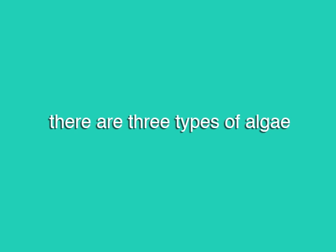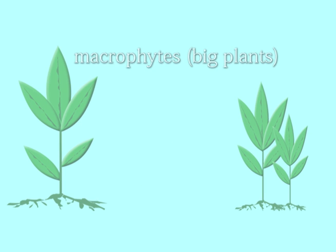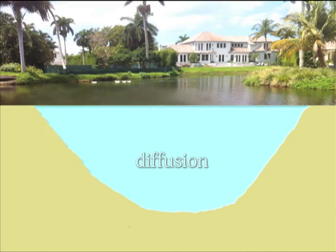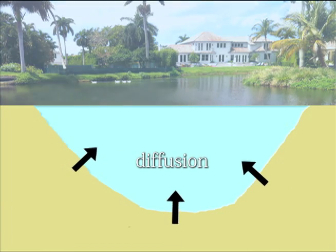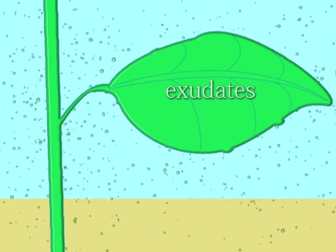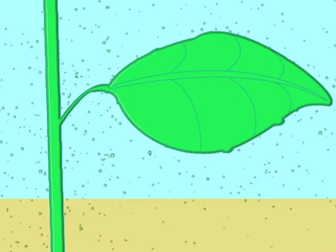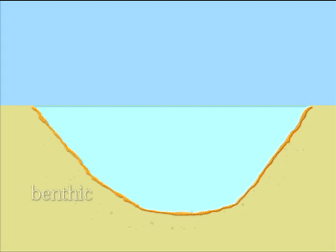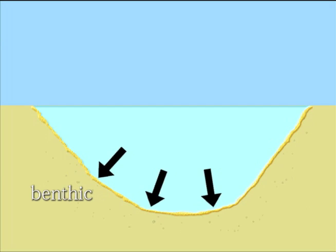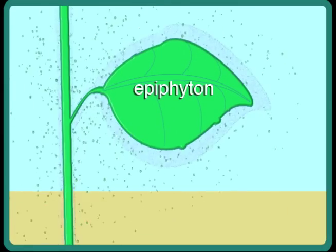In a healthy pond, there are three types of algae: benthic, epiphyton, and phytoplankton. Macrophytes are big plants in our ponds that take out nutrients. Nutrients enter our ponds in several ways. One way is diffusion, where nutrients enter from the soil on the bottom, leaching into the water column. Another natural source is exudates, where nutrients leave the macrophytes, escaping from their plant tissues, and enter the water column. The benthic algae layer takes up the nutrients coming up from diffusion on the bottom, and the exudates are taken up by the epiphyton that grows on the plants.